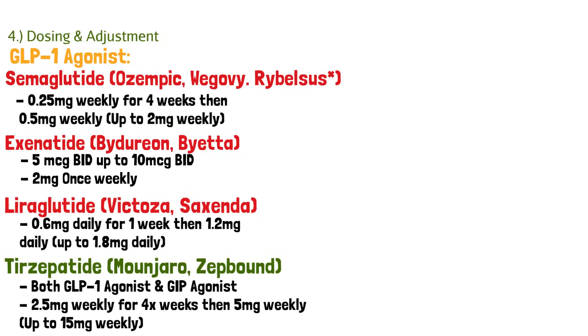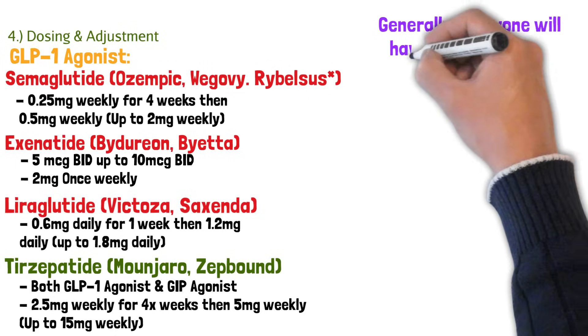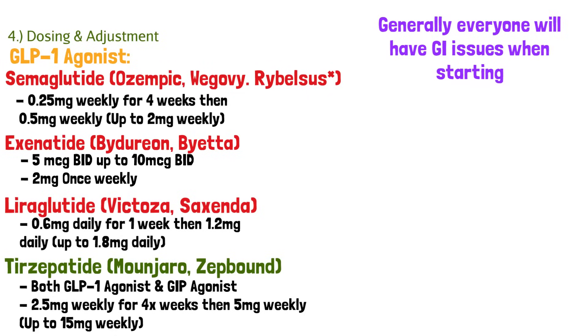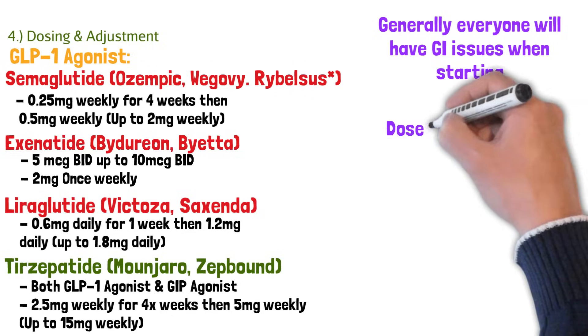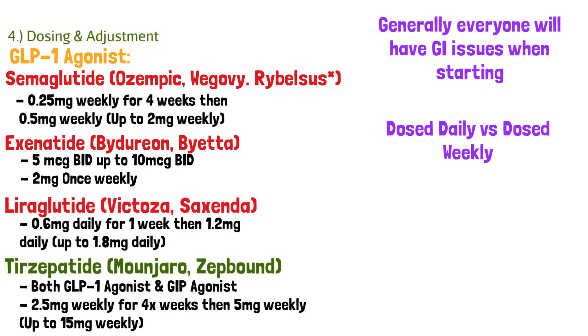Now, here's some caveats. You need to kind of know this. Anyone starting GLP-1 agonist will have some sort of GI issue. So they'll feel nauseous. They'll want to feel like they're vomiting because it slows down gastric emptying. And when food sits in your stomach or intestines longer, you start feeling nauseous. You also need to know that some of these are dosed daily. Some are dosed weekly. It really does help to know which one's which to guide therapy for patients.